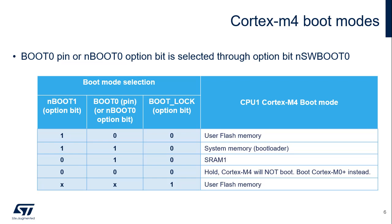There are three Cortex-M4 boot modes: User Flash, System Memory Bootloader, and SRAM1, which are selected by the NBoot0 option bit or the Boot0 pin, the option bit named NBoot1, and the option bit named BootLock. When the Boot0, NBoot1, and BootLock option bits are set to zero, the STM32WL5 holds the Cortex-M4 and boots on the Cortex-M0+. The standard method to get the STM32WL5 Cortex-M4 core booting from user Flash is to set NBoot1 = 1 and Boot0 and BootLock option bits to zero.